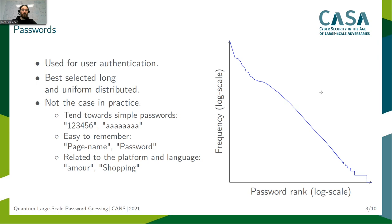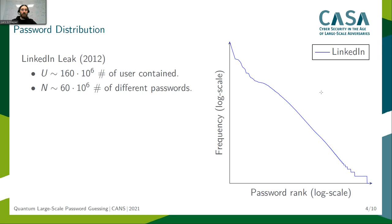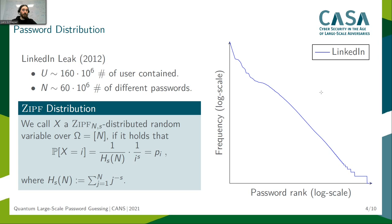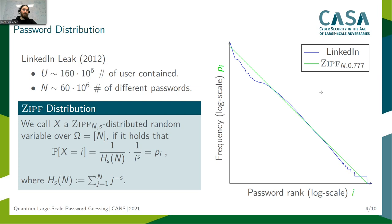Let us come back to the plot on the right. This is the plot of the LinkedIn leak from 2012, with roughly 160 million users and 60 million different passwords. We can see that the plot is nearly a line in the log-log scale, so we can approximate it via the Zipf distribution, which is also only a line in the log-log scale. The Zipf distribution probability is given by a scaling factor times 1 over i to the power of s, where i represents the rank of the password and s gives us the slope of the line in the log-log scale. A slope of roughly 0.777 fits our LinkedIn leak best.